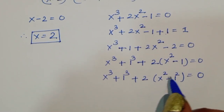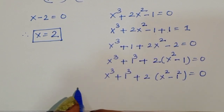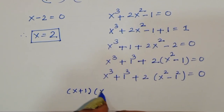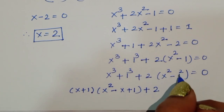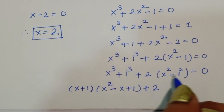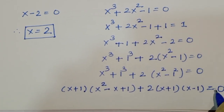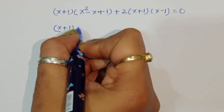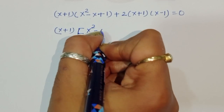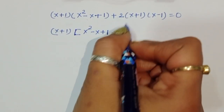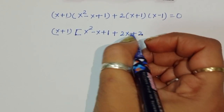We now have two formulas to apply: a³ + b³ and a² - b². For x³ + 1³, using a³ + b³ = (a + b)(a² - ab + b²), we write (x + 1)(x² - x + 1). For 2(x² - 1²), using a² - b² = (a + b)(a - b), we write 2(x + 1)(x - 1). So the equation becomes (x + 1)(x² - x + 1) + 2(x + 1)(x - 1) = 0.